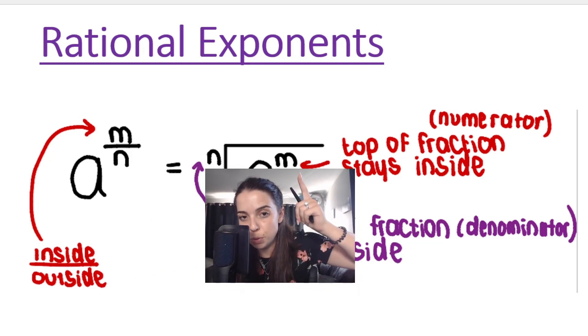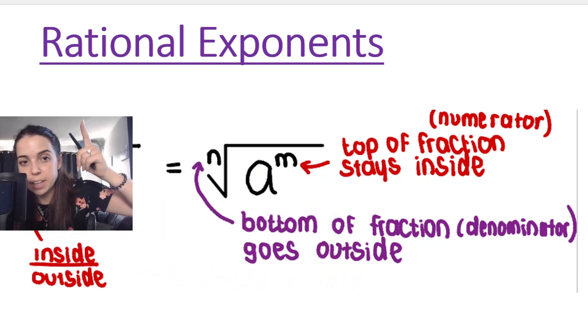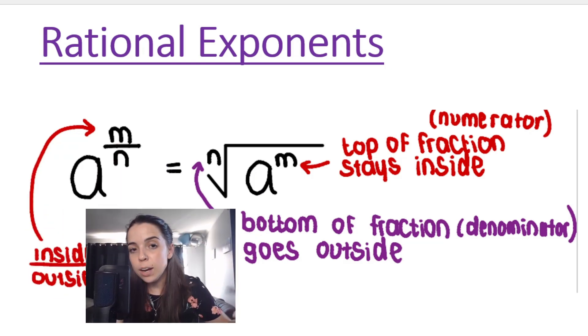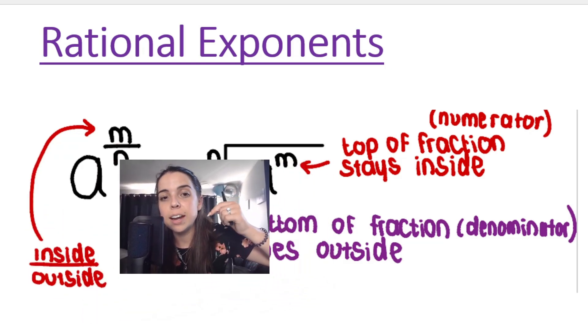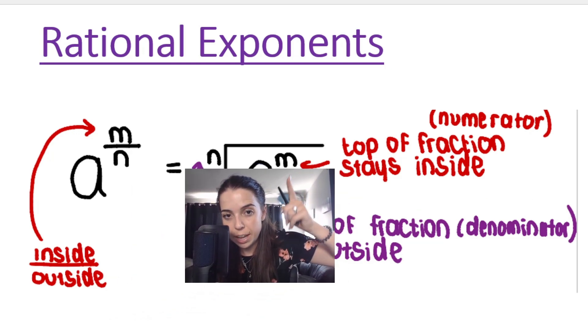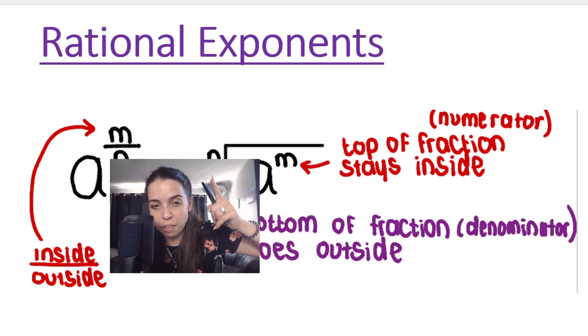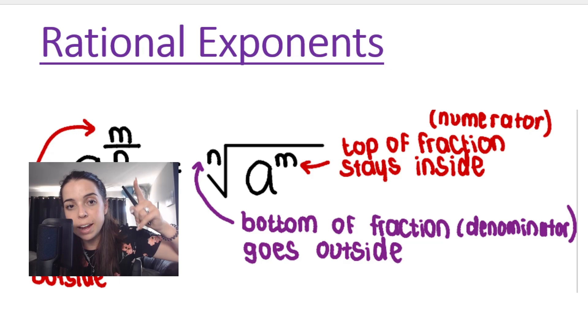This becomes your numerator. This becomes your denominator. As you can see, numerator, denominator. So I call it the inside divided by outside rule. m is on the inside, n is on the outside. Inside divided by outside.